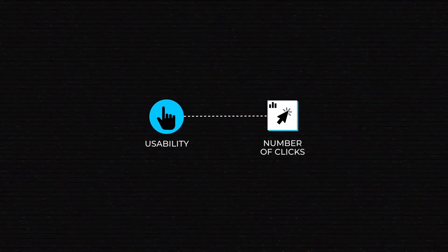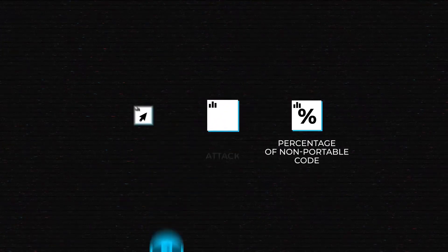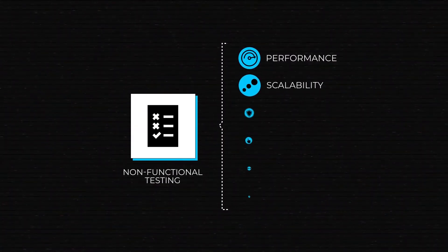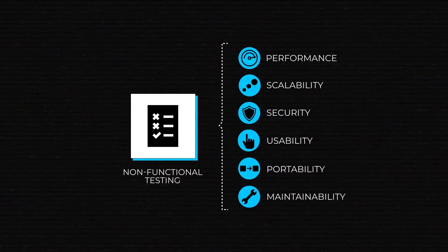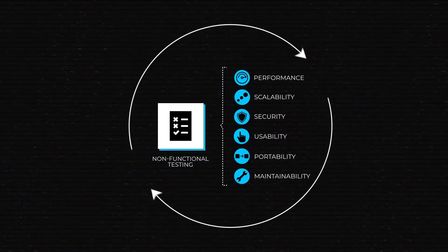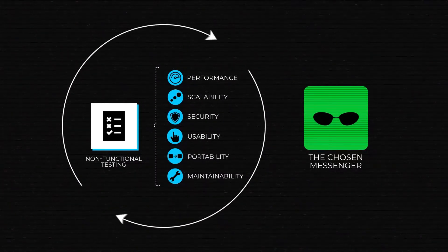Usability can be measured in the average number of clicks it takes a person to complete some task. Portability is evident when we know the percentage of non-portable code. And all of those things are checked and counted during non-functional testing. Non-functional testing basically comprises different tests for performance, scalability, security, usability, and other attributes. These tests are usually automated, since non-functional requirements are global and critical to our application.